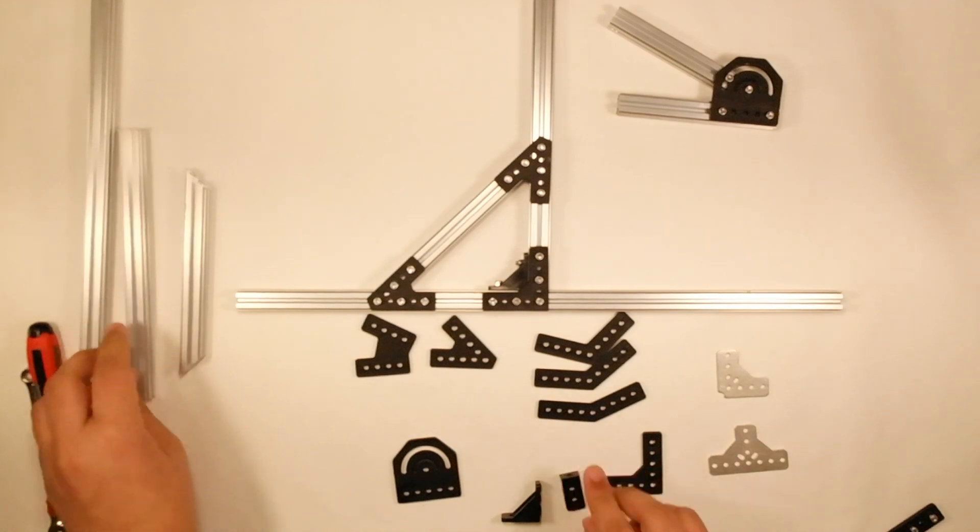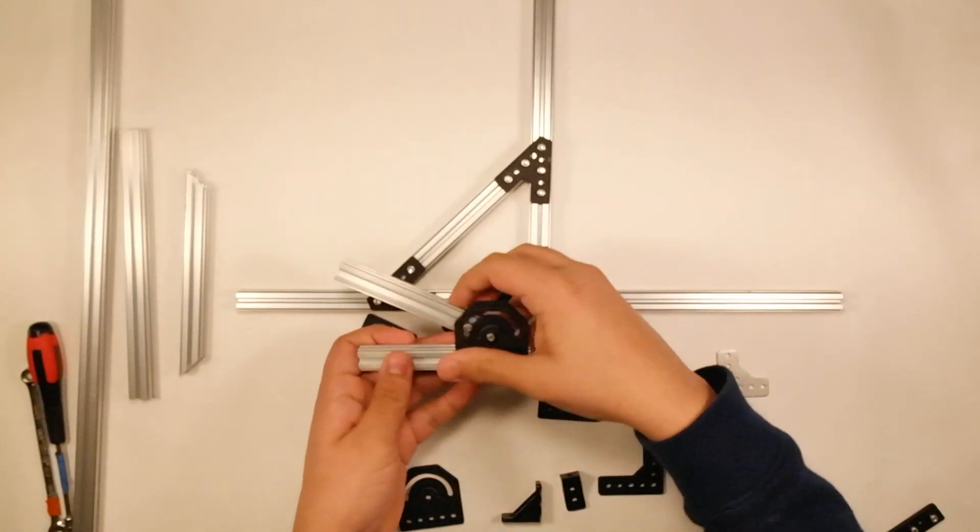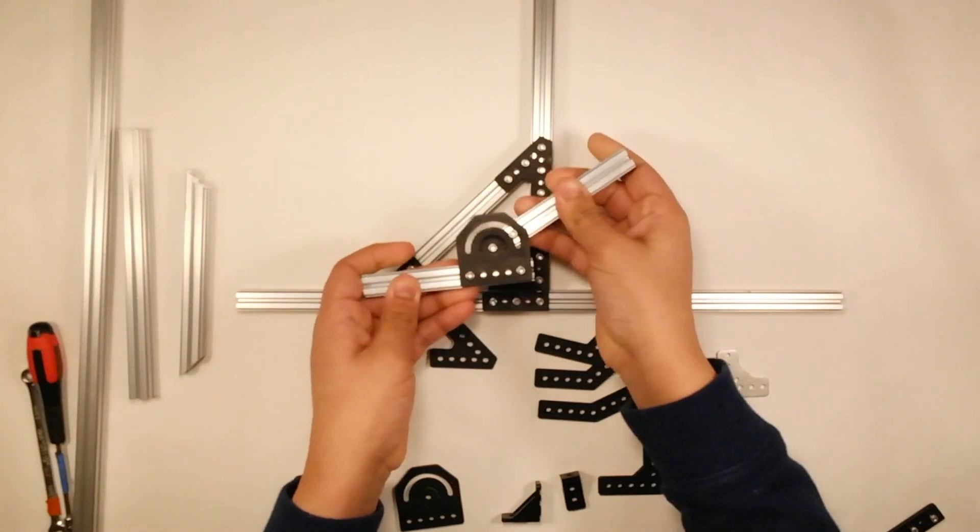In addition to that, there is also the variable angle bracket, which you can see here, which allows you to make any different angle bracket that you want.